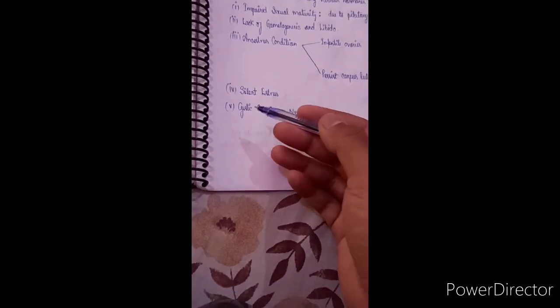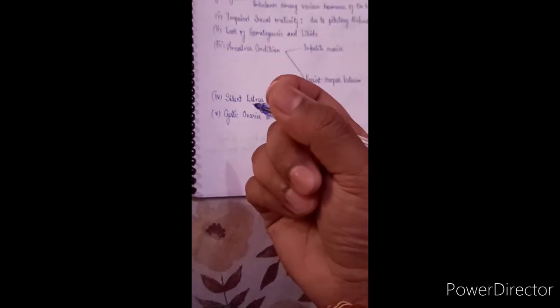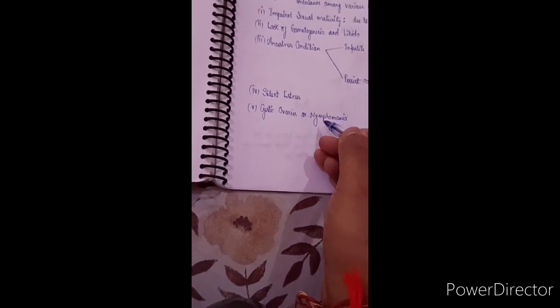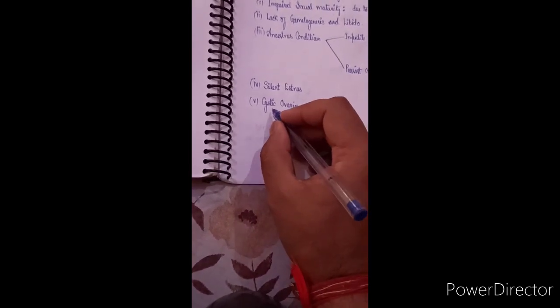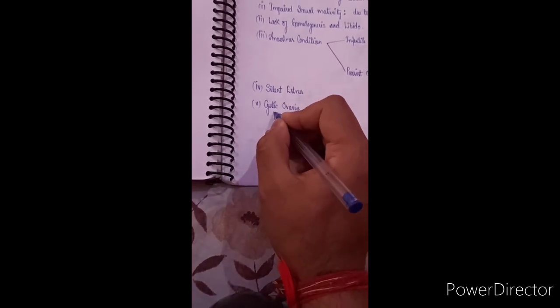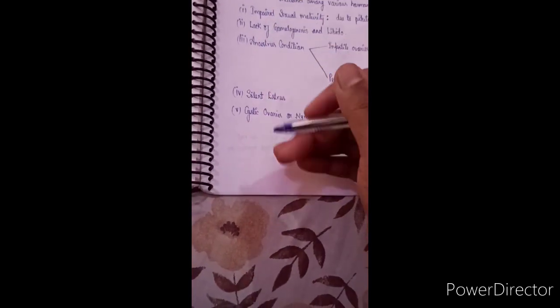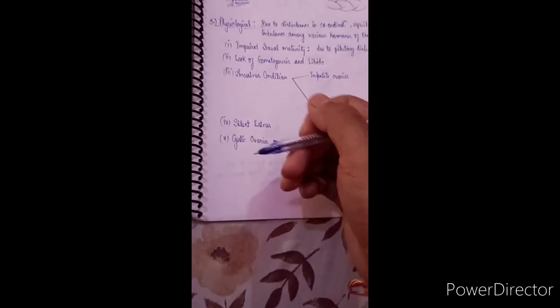Another physiological cause is cystic ovary. When a cyst or blister on the ovary persists, the follicle cannot be released. Due to cystic ovary, the animal develops nymphomania — meaning the animal cannot conceive and keeps asking for breeding again and again. To correct cystic ovary, either medical treatment is given or the veterinarian performs manual correction by inserting a hand and carefully picking and removing the cysts. These are the physiological causes of sterility; the remaining causes will be discussed in the next video.